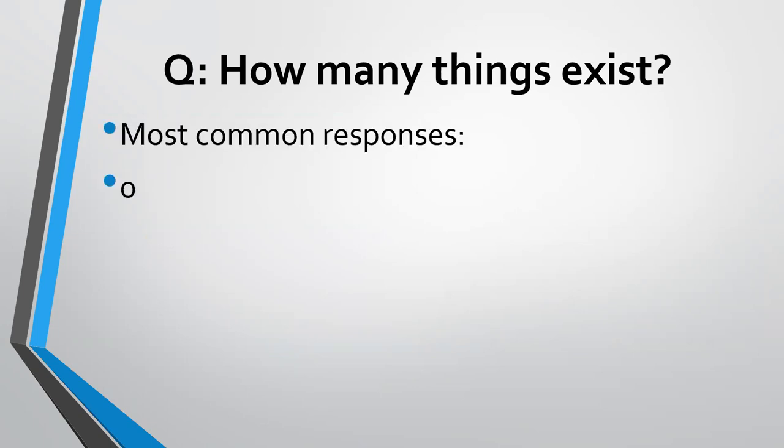The most common responses of philosophers are zero — so that would be nihilism — one, that would be monism, or many. It's odd, says Van Inwagen, that we don't have a common defense of the answer being two, some form of dualism in metaphysics, but that's not really the kind of position that very many people have taken.